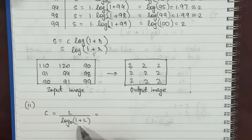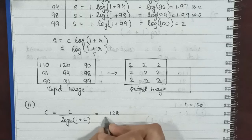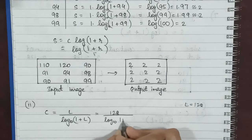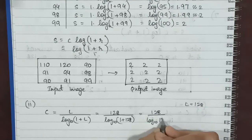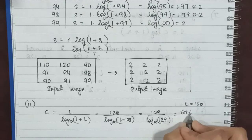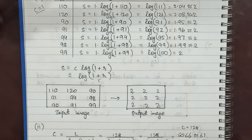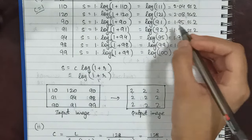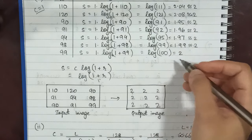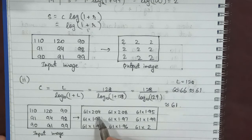The second case uses c = L / log₁₀(1 + L). Our L value was 128, so we calculate 128 / log₁₀(1 + 128) = 128 / log₁₀(129) ≈ 60.66, which rounds to 61. To calculate the output matrix, we multiply 61 by each of the s values obtained from the first case.